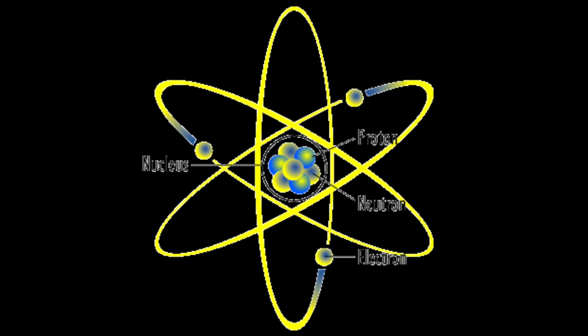An atom is the smallest part of an element that can be recognized as that element. An element is a substance made of simply one type of atom, and a compound is two elements which have been chemically combined.